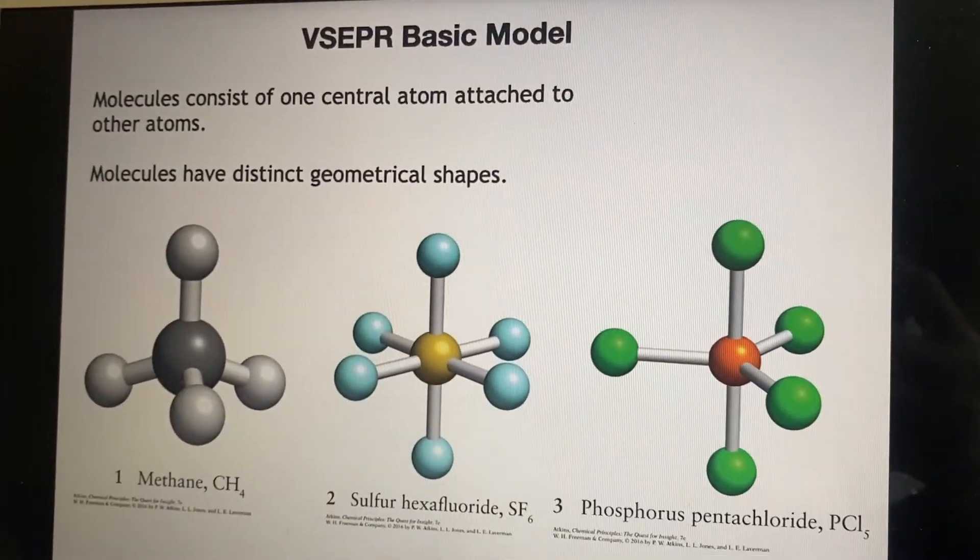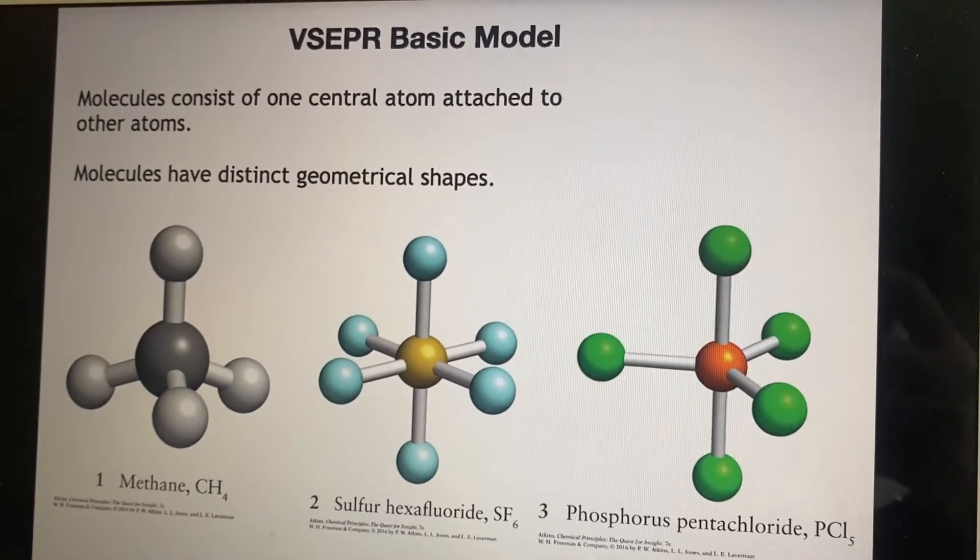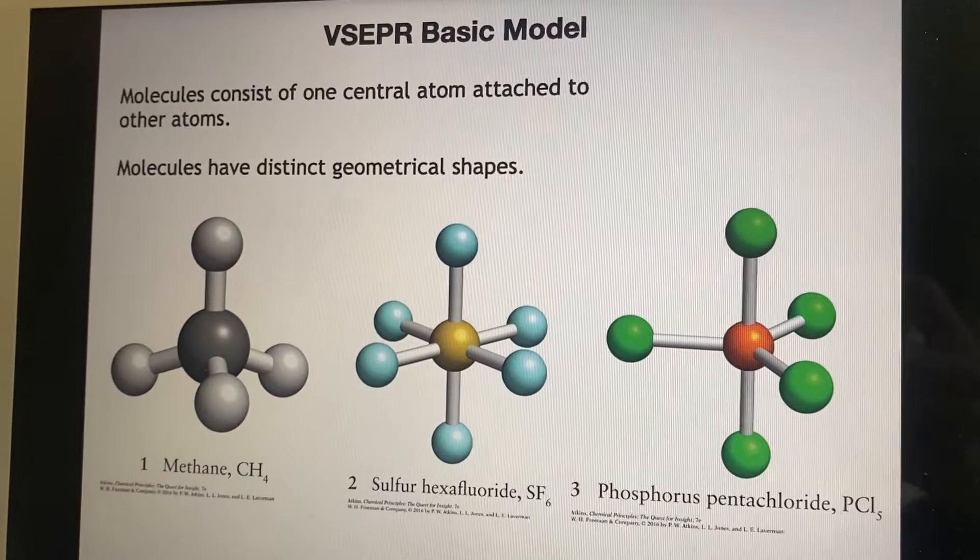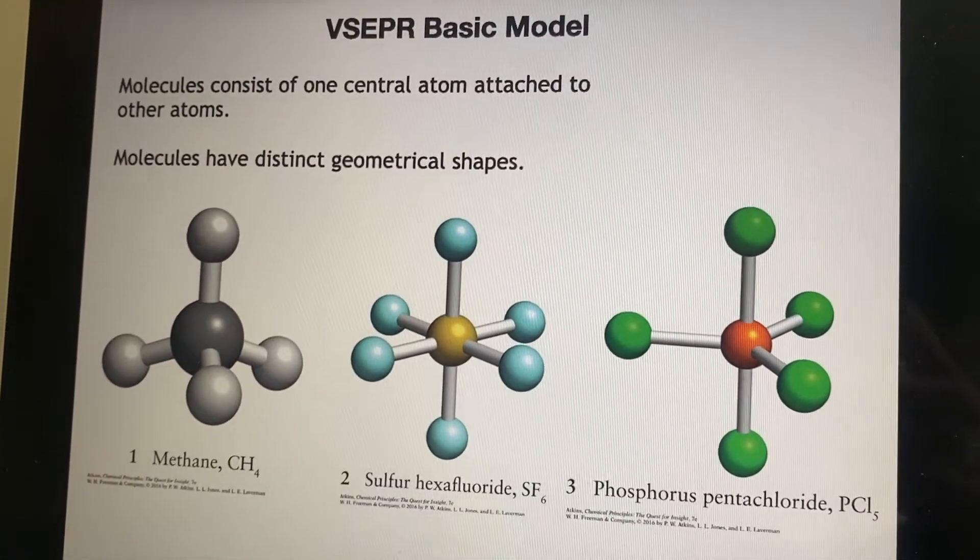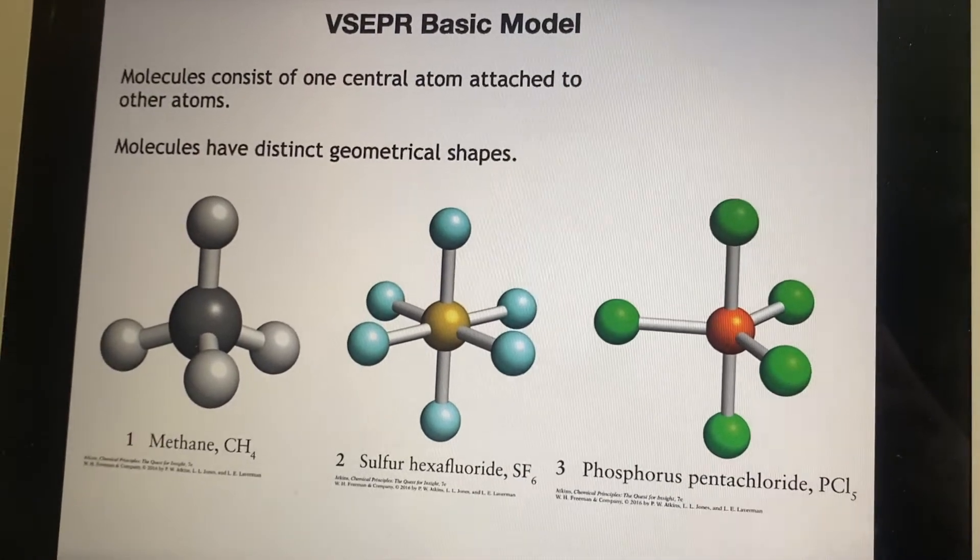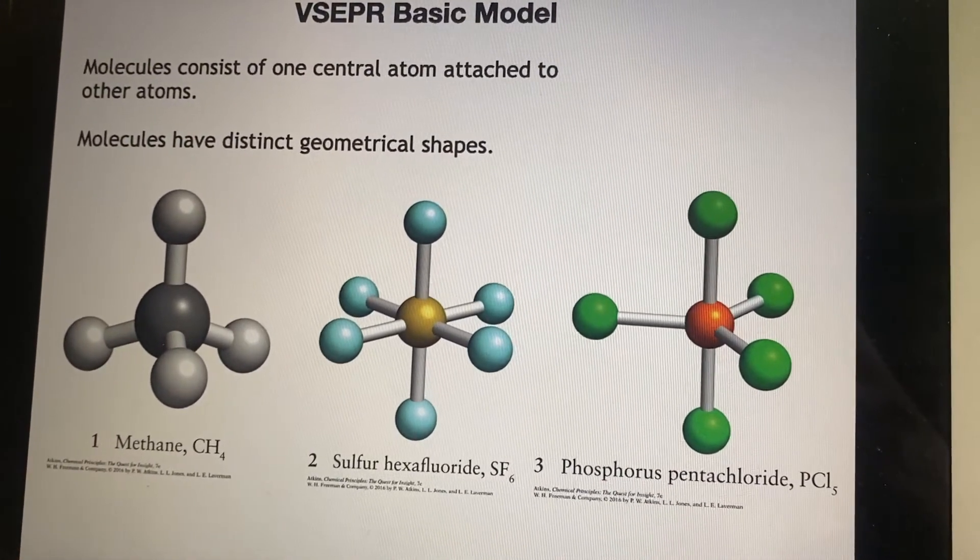So let's talk about the VSEPR model. We're saying that molecules are essentially one central atom, and then the other atoms are attached to it. So when we have that situation, you're going to have very distinct geometrical shapes.